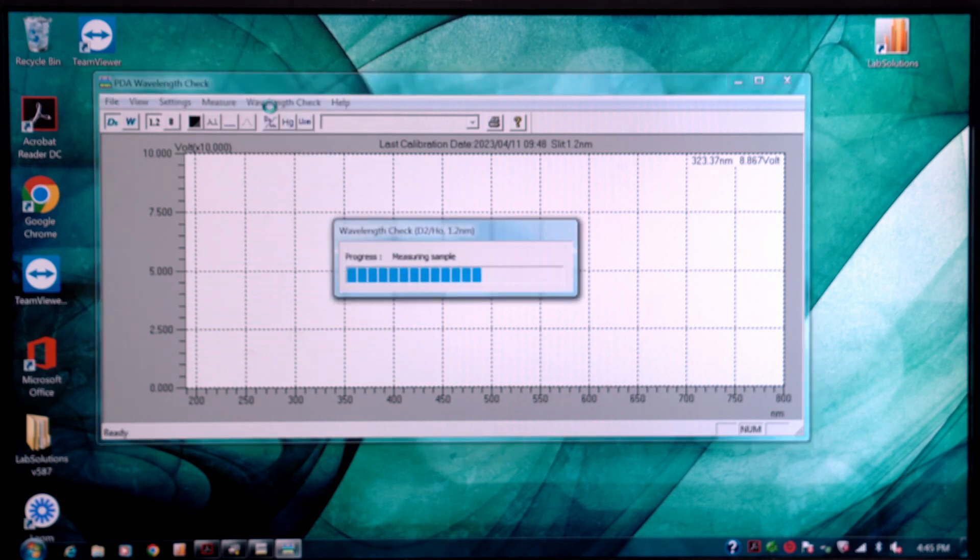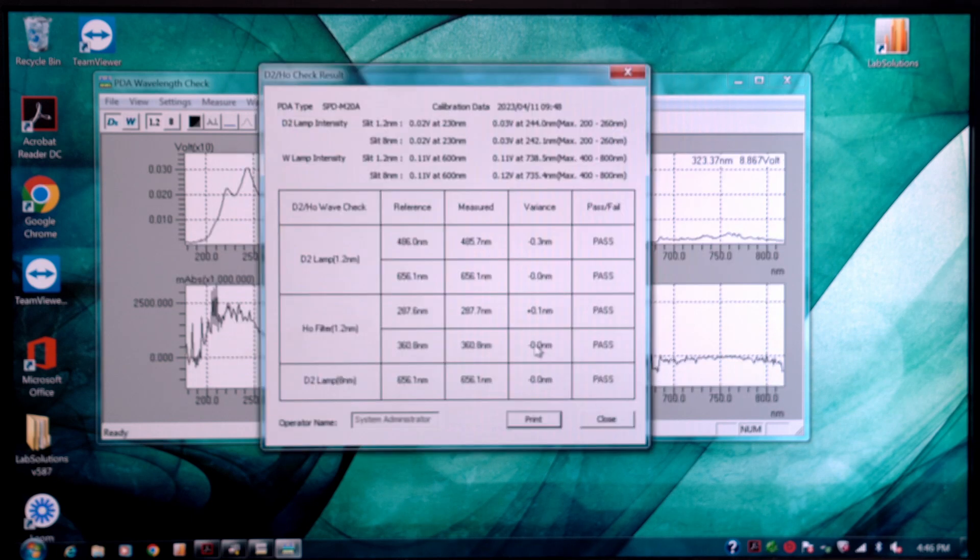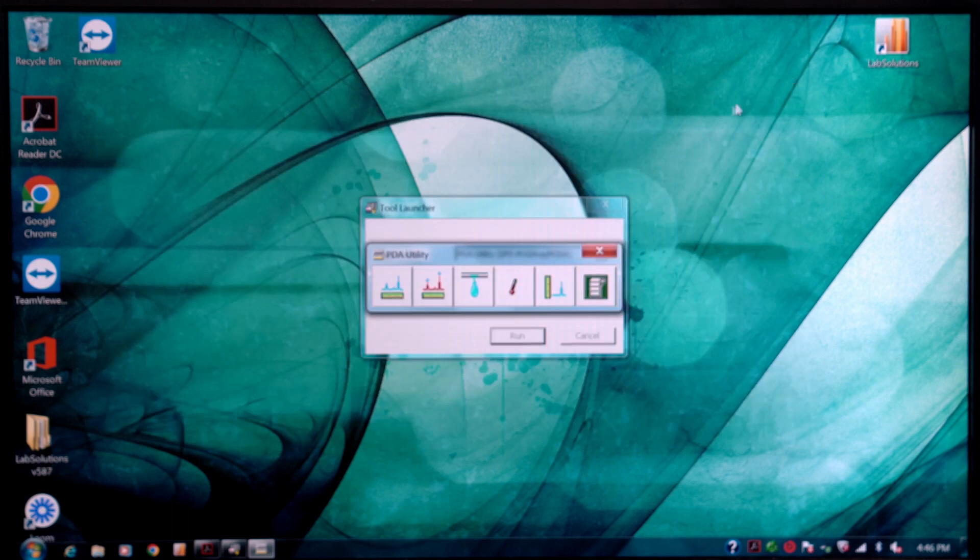If this fails, you either have forgotten to put water in the flow cell, you have bubbles, or maybe you should change the lamp, which is what we're doing. So look, everything passed. If this fails, the next thing you want to do is go here to wavelength calibration.